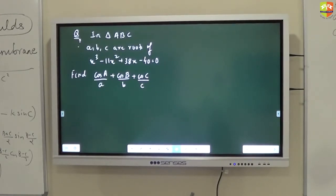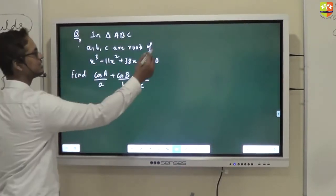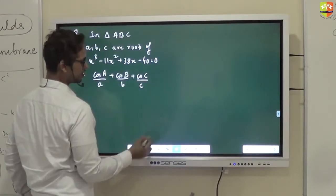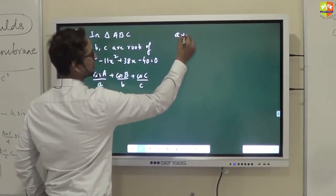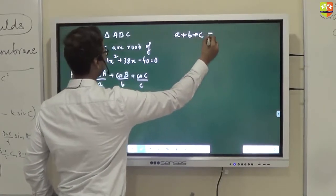In class, we would have learned that sum of the roots alpha, beta, gamma or ABC: sum of the roots is -b/a, product of the roots 2 at a time is c/a, all three at a time minus d/a. This is what you need to apply. Sum of the roots will be 11.